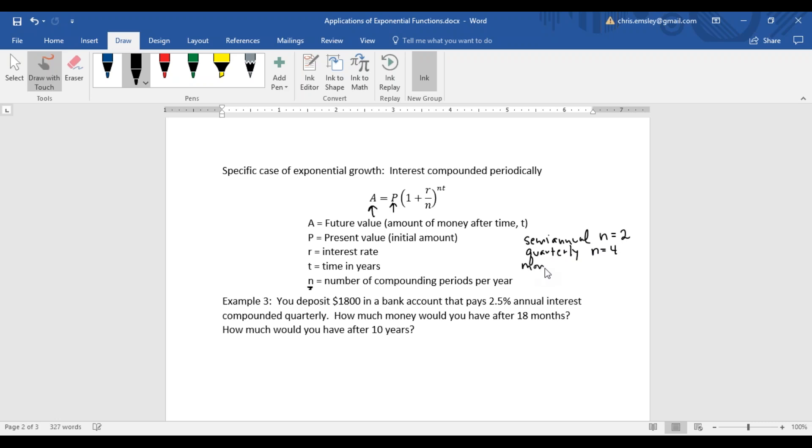You might see monthly. If interest is compounded monthly, that would be 12 times a year. Maybe weekly - there are 52 weeks in a year, so that would be n equals 52.